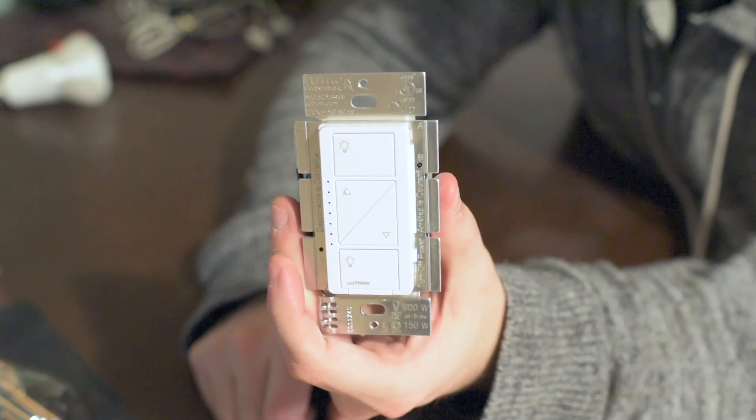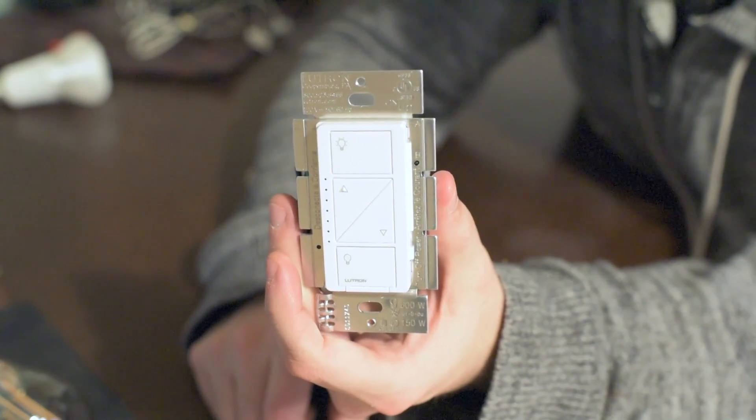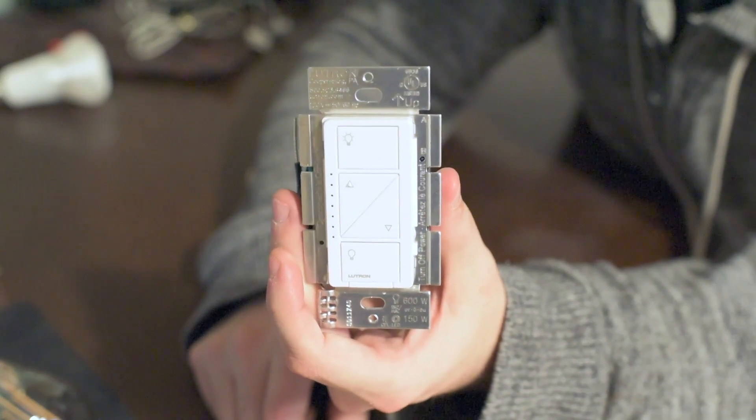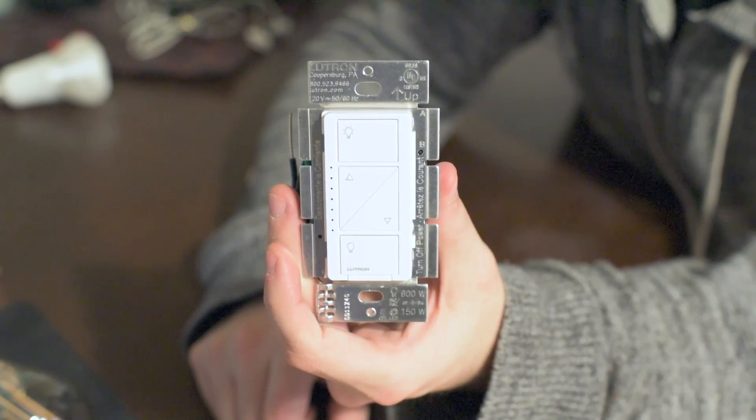All right. The first dimmer that I have here, this is a modern dimmer. This is a Lutron Caseta dimmer. I don't know if that's how you're supposed to pronounce it. Caseta, Caseta, whatever.